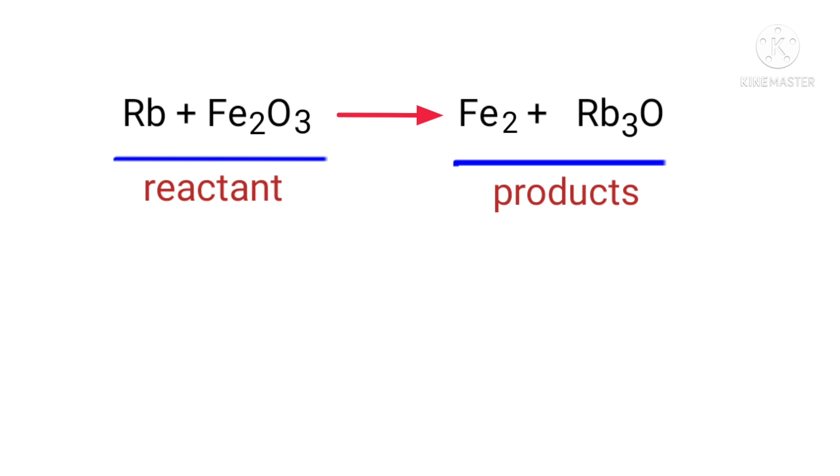In this equation, the reactants are rubidium and iron 3 oxide, and the products are iron and tri-rubidium oxide. If you look at this equation, the equation is not balanced.